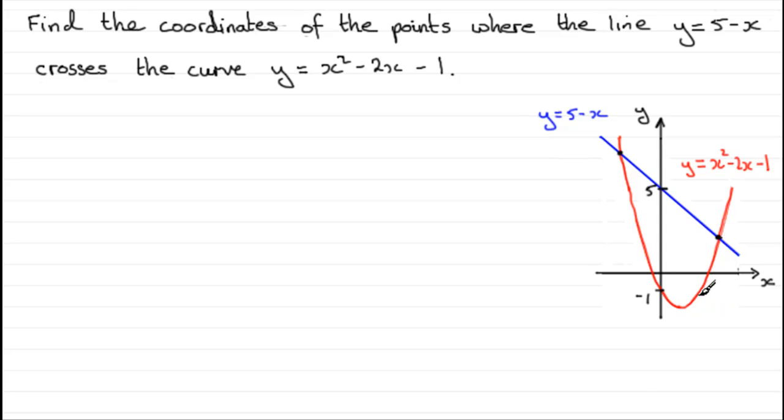So to get those points, what we're going to need to do is solve simultaneously these two equations. First of all, I'd write a subtitle in here, at points of intersection, just to give some kind of idea what's going on for the reader. What we've got then is that we could put these two y values together. We could say that x squared minus 2x minus 1 will equal the y value 5 minus x.